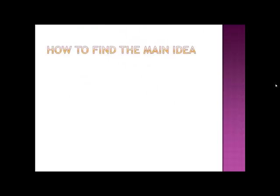Now let's talk about finding the main idea. The first thing we do is find the narrow topic. The topic by itself is not enough — we have to figure out what specifically it is telling us about the topic. Our topic was mammals, but what is it about them? Is it about what they eat, or where they live, or what they look like? Not really. It's about their heartbeats. So the narrow topic is mammals' heartbeats.